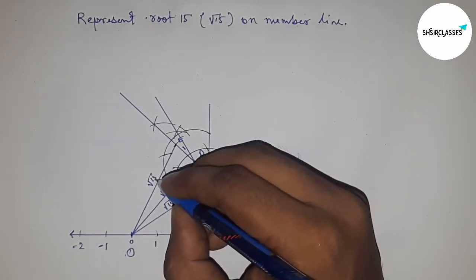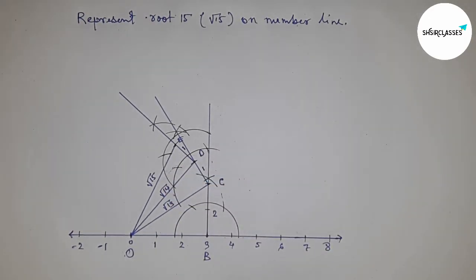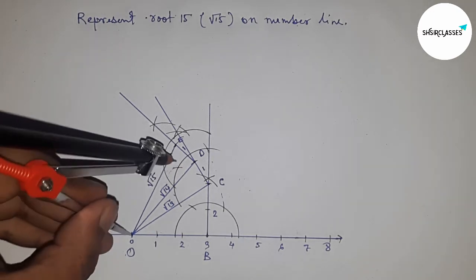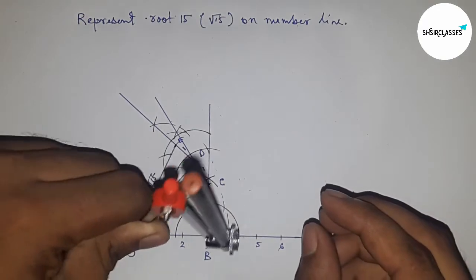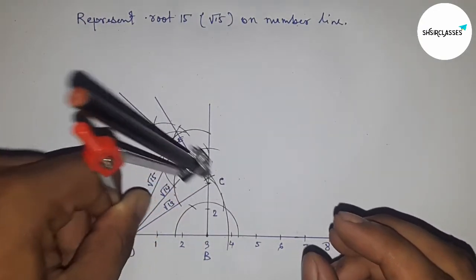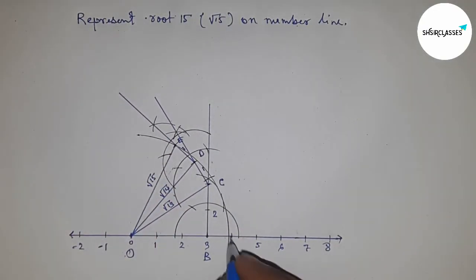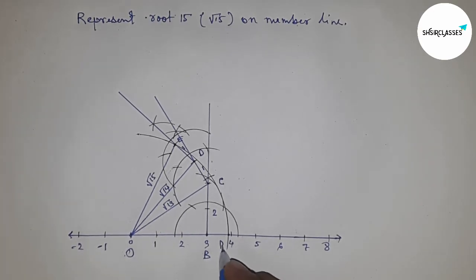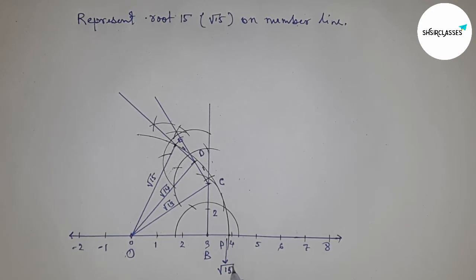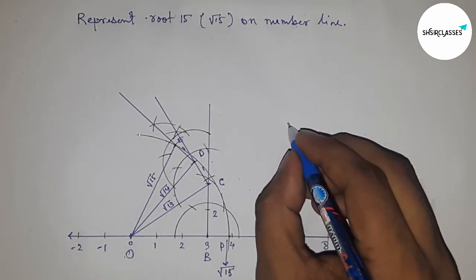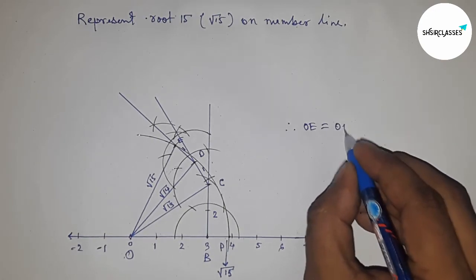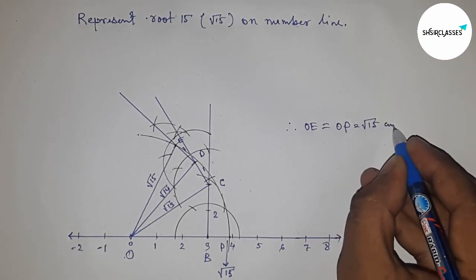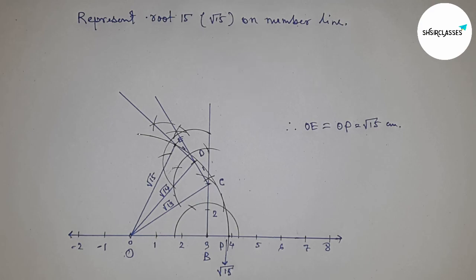Joining E and O — triangle ODE is a right angle triangle with one unit side, so the hypotenuse is obviously root 15. Taking the length OE by compass and drawing an arc which cuts the number line at point P. This is the representation of root 15 on the number line. Therefore OE equals OP equals root 15. That's all — thanks for watching, please subscribe, like and comment.